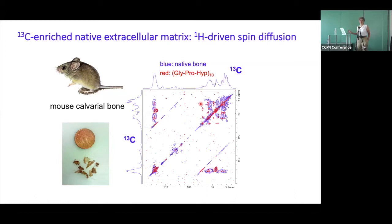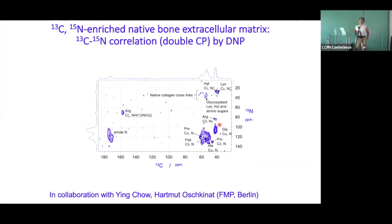You can assign those spectra partly by reference to NMR chemical shift databases, although collagen proteins are rather underrepresented in those databases. More often we make synthetic peptides of fragments of collagen-like proteins, label those, and use them as references to start to assign the spectra. You can also use dynamic nuclear polarization in the solid state, where you exploit the very large electron spin resonance of a radical added to the sample at very low temperatures, around 90 Kelvin, transfer the electron spin to protons, and then cross-polarise from protons to carbon-13.